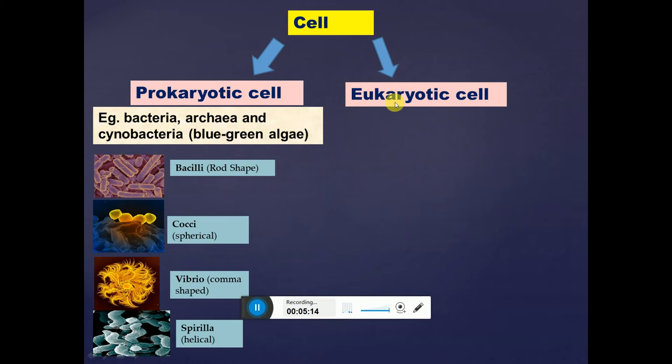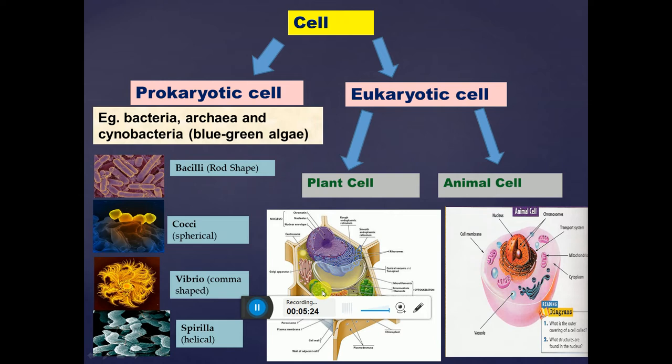The second category is the eukaryotic cell. There are two major types: plant cells and animal cells. In plant cells we can see green-colored chloroplasts, a single large central vacuole, and a cell wall that gives a definite shape to the cell. These three features — chloroplasts, a single large central vacuole, and a cell wall — are lacking in animal cells.